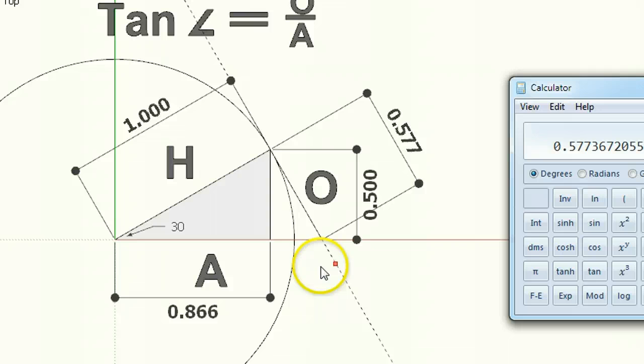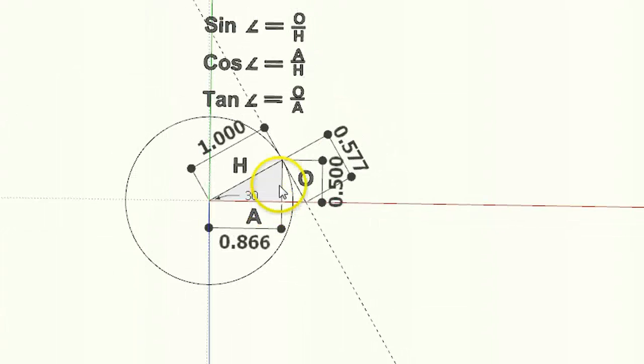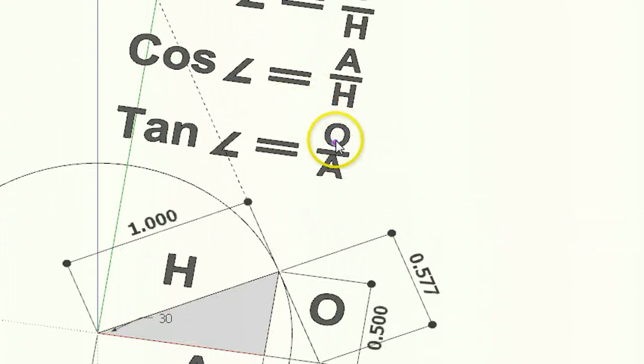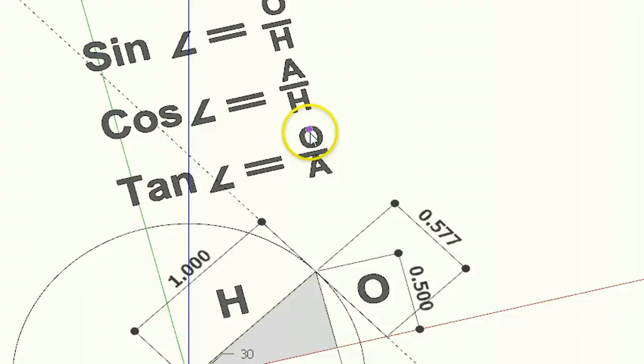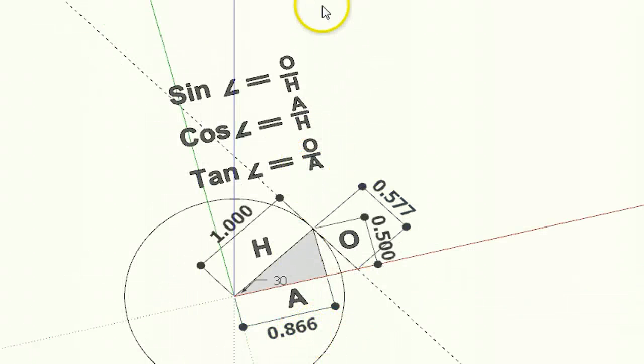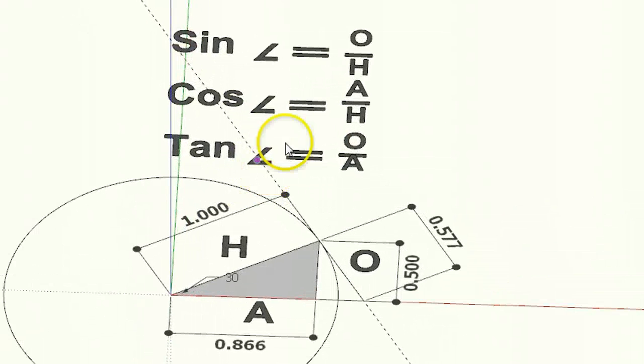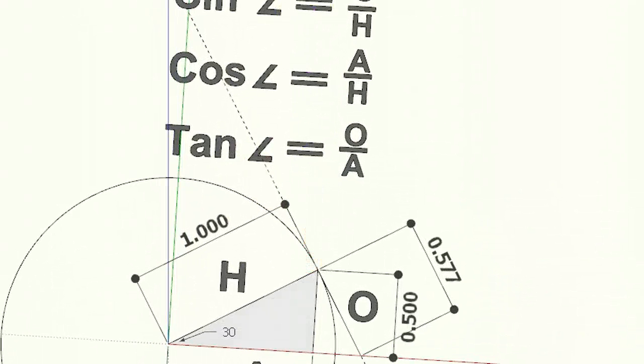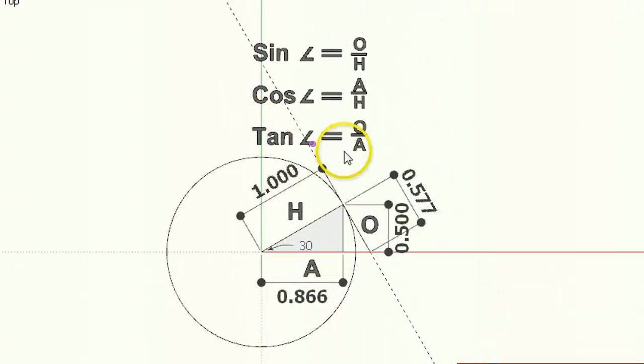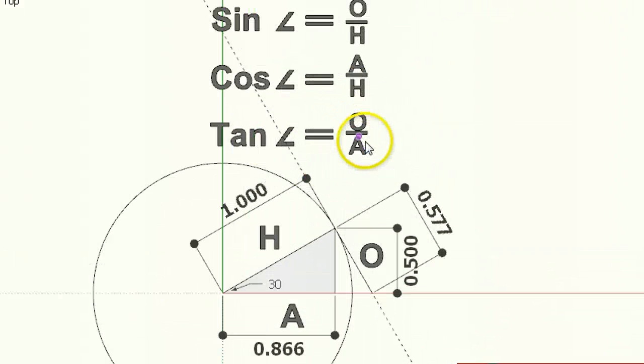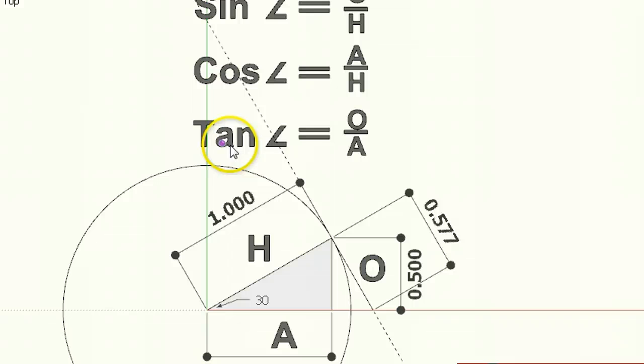So you can see now, by looking at this, that we have the opposite here, which—let's look at our little formula up above—we have the opposite here, which is 0.5, and we have the adjacent, which is 0.866. And let's look down on top. And if we divide one into the other, we get the tan of an angle.